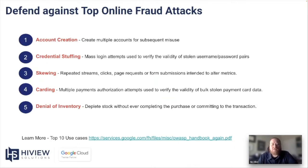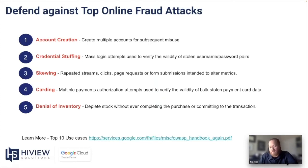We're going to briefly walk through the top five online fraud attacks that OWASP has identified. Number one is account creation — a fraudulent user creating multiple accounts for subsequently misusing them. Number two is credential stuffing, where they create mass login attempts to attempt to take over or utilize leaked web credentials. Number three is skewing — repeated streams, clicks, or page requests to skew results — which could also apply to online voting for things like reality show competitions.